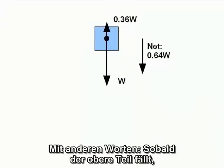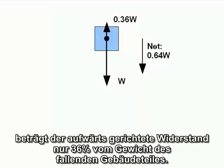In other words, once it starts falling, the upward resistive force is only 36% of the weight of the falling section of the building.